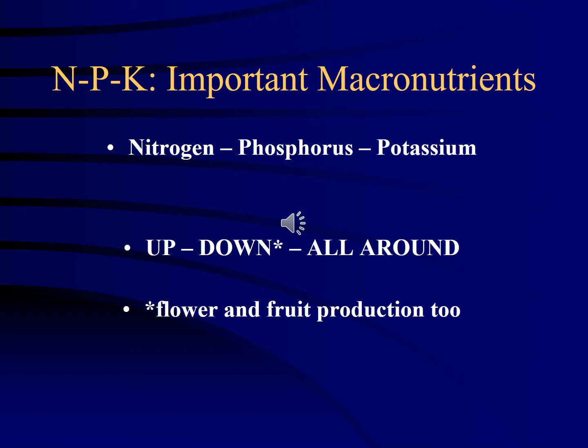An easy way to remember the function of nitrogen, phosphorus, and potassium is the NPK mnemonic: up, down, all around. Nitrogen is responsible for above-ground vegetative growth. Phosphorus induces and encourages root growth — the down part — and also promotes flower and fruit production. Potassium supports all-around growth and vigor of the plant. So: up, down, all around for the functions of NPK.